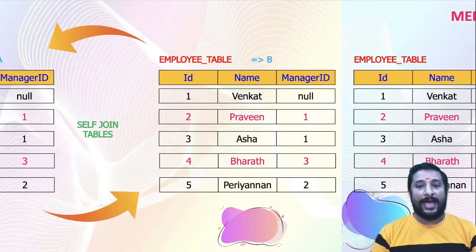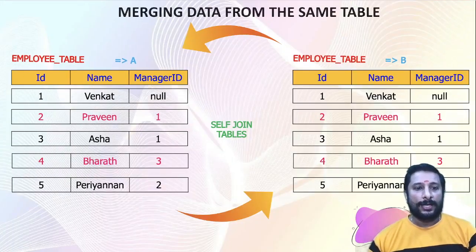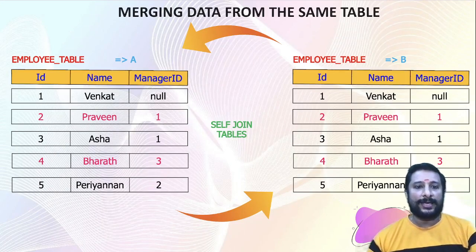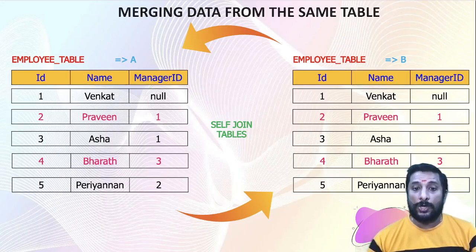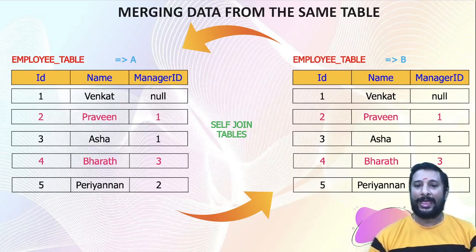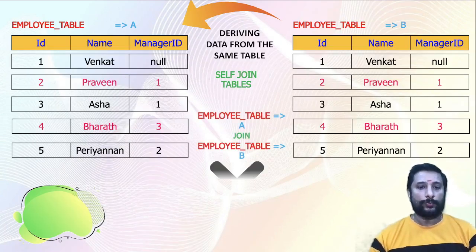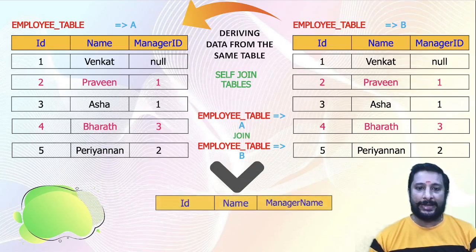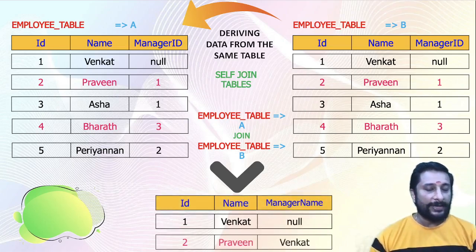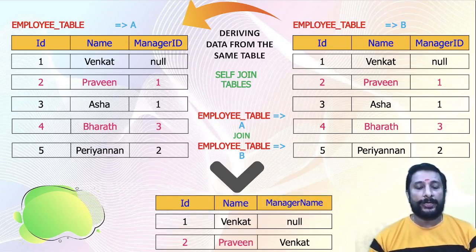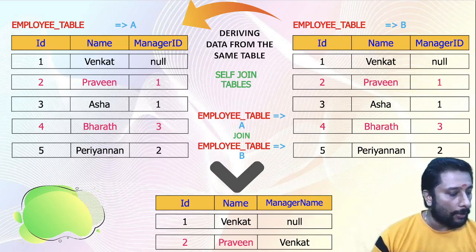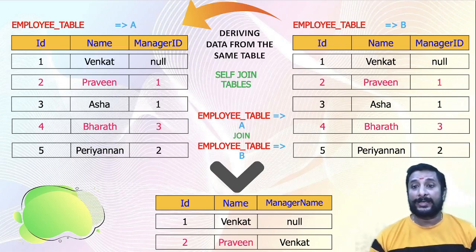There are scenarios where I don't need two different tables — I want to restructure the same table. In that case I join the same table using different aliases: name it as employee A and employee B. By joining the same table with two different names I'm able to restructure it and fetch the data. You can see employee table A joined with employee table B — both have the same data, and joining them lets me fetch the required output.